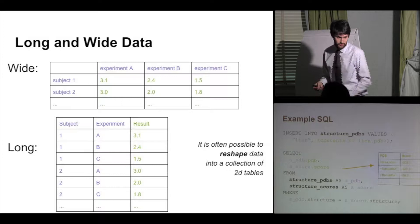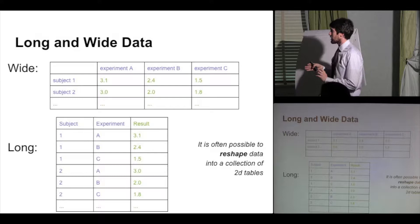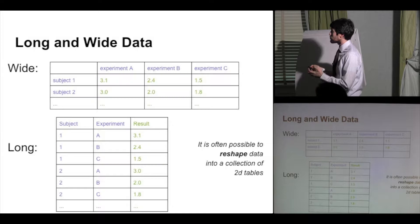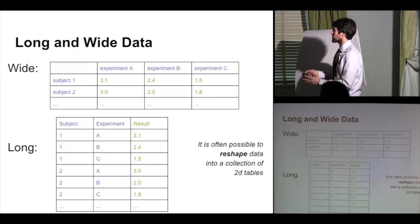One objection to storing data in tables is that it can be limiting. Some data, like coordinates in R3, may not feel natural in a table format. One common way to handle this is through the wide versus long representation of data. This is a useful concept, and worth exploring.